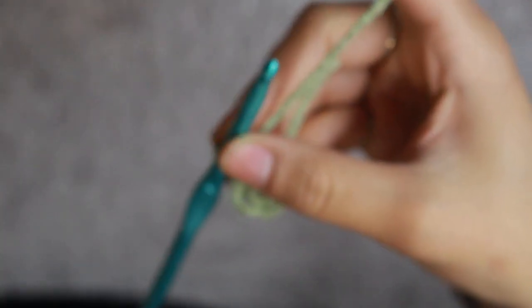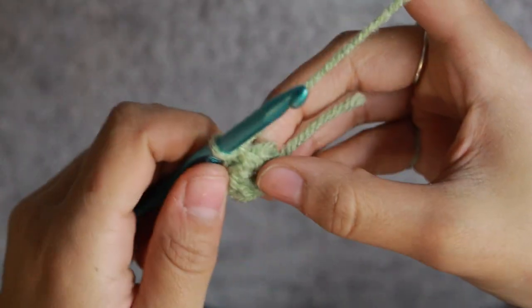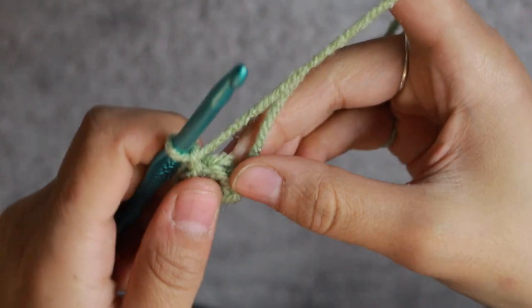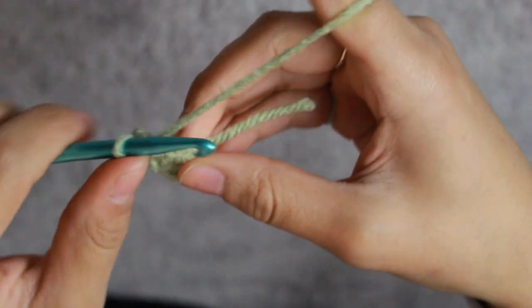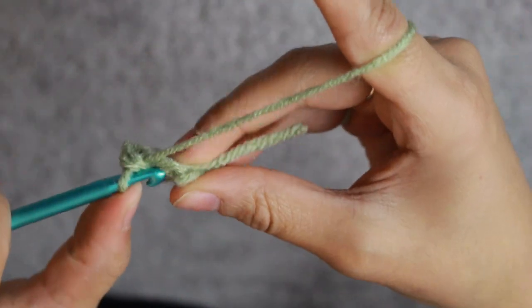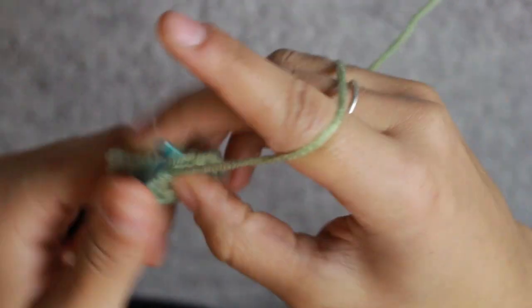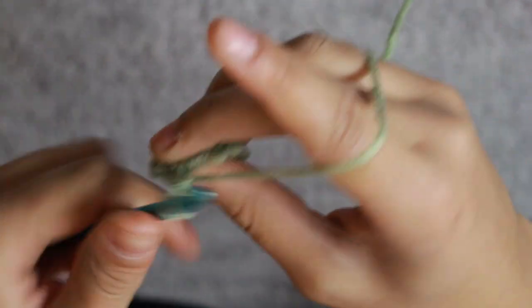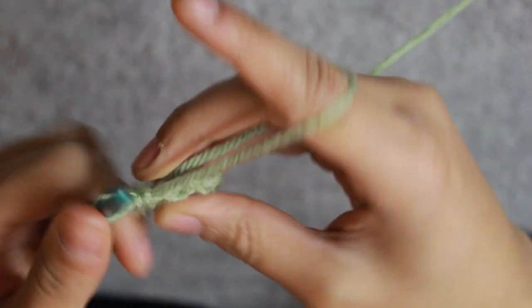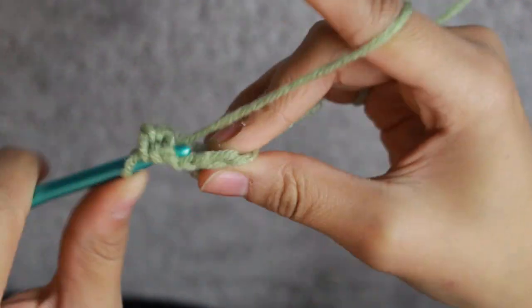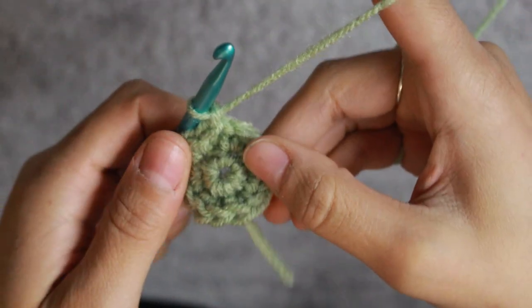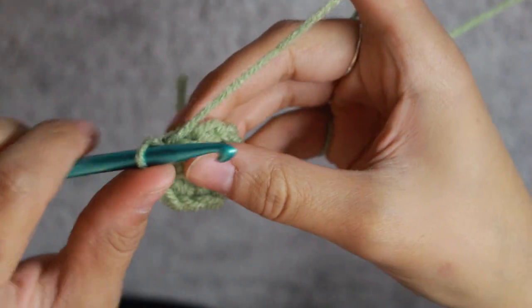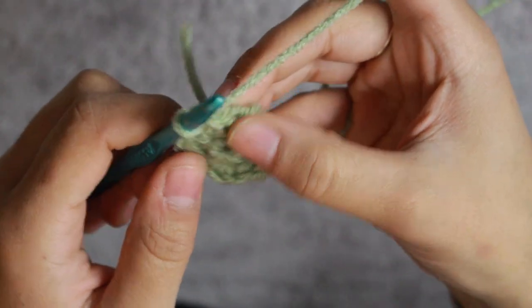At the end, you will do a slip stitch and then chain one and then you will begin your next round. To increase in the second round, you'll do two single crochets into each stitch which will then create ten stitches overall. At the end, you'll do a slip stitch and then chain one and begin the third round. The third round will have one single crochet in the first stitch, then two single crochets in the next stitch, and so on and so forth.